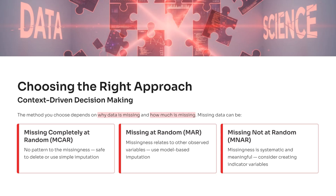3. Missing not at random, or MNAR. This is when the missingness itself carries meaning. For example, customers with very high income may choose not to disclose it. Here, you can create an indicator variable to flag missing entries, since the fact that it's missing adds information.